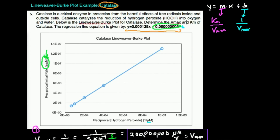That concludes our first video on the catalase Lineweaver-Burk plot, where we calculated the Vmax and the Km. In the next video, we'll continue this same problem and calculate the Kcat and the catalytic efficiency. Thanks for watching — make sure to like and subscribe.